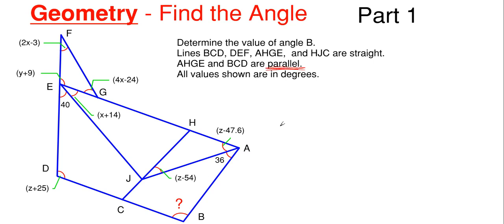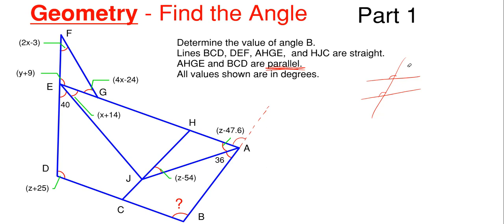So how do we get to our angle down here at B? We can use the straight lines and the parallel line information. If we extend line AB, since AHGE and BCD are parallel, line AB acts as a transversal intersecting these two parallel lines. So angle B is actually equal to the corresponding angle up here, because two parallel lines intersected by a transversal produce corresponding angles inside and outside the lines.